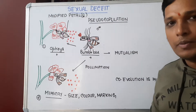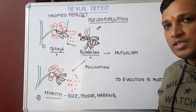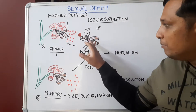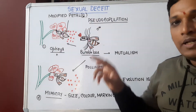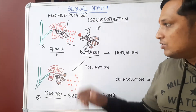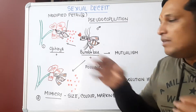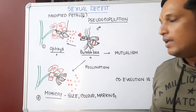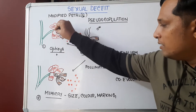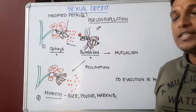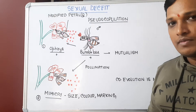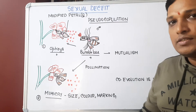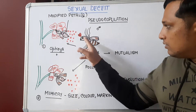So the male bee thinks there is a female bee, but it is actually a petal. It goes, sits on the petal, and copulates. This copulation is called pseudo-copulation — why pseudo-copulation? Because it is not a true sexual intercourse; instead, the male bee is copulating with the petal. Whatever mechanical movements occur during copulation occur in the flower itself, and during that process, pollen grains stick onto the male bee.